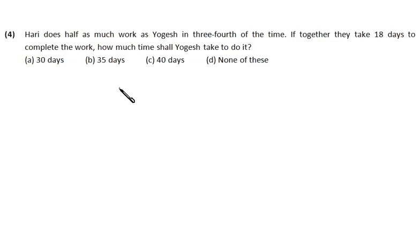Now I assume Yogesh is taking X days to complete the work. Now Hari is doing, I just forget half as of now. Hari is taking three-fourth of the time to finish up the work. I forget half for a while. So Hari is taking three-fourth of the time. That means he is taking three-fourth of X days to complete the work.